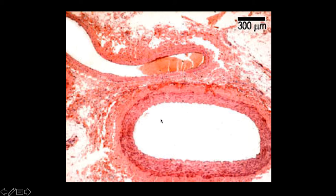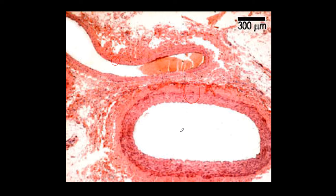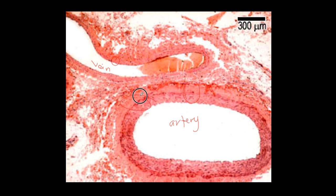In another micrograph, you can again identify the artery by its much thicker wall compared to the vein. Note that the artery has a more rigid structure, while the vein's lumen often appears collapsed compared to the artery. The wall of the artery is consistently much thicker than the vein's wall.